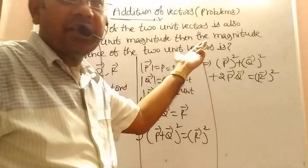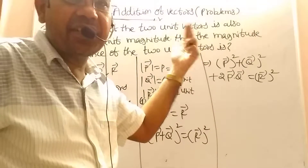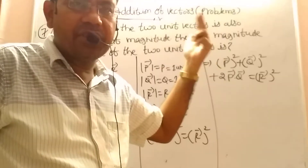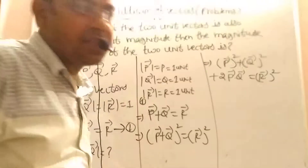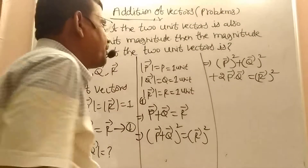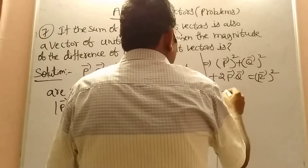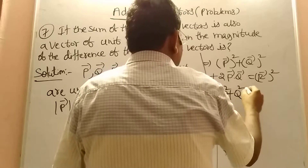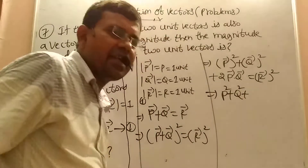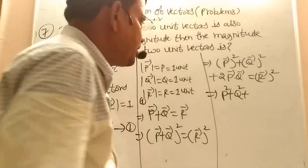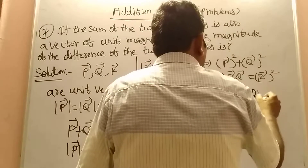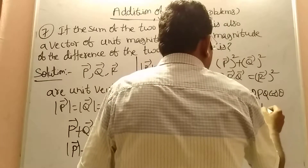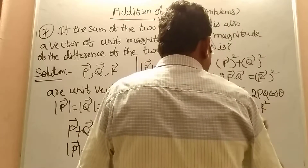P vector squared we write as P·P. Since A·B = AB cosθ, P·P = P·P·cos0 = P². So we write this as P² + Q² + 2PQ cosθ = R². This is the second equation.